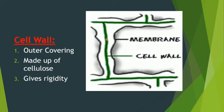What is the cell wall? The cell wall is the outer covering of the plant cell. It is made up of a tough material called cellulose. Due to the presence of cellulose, the plant cells are rigid — cellulose gives rigidity to the plant cells.